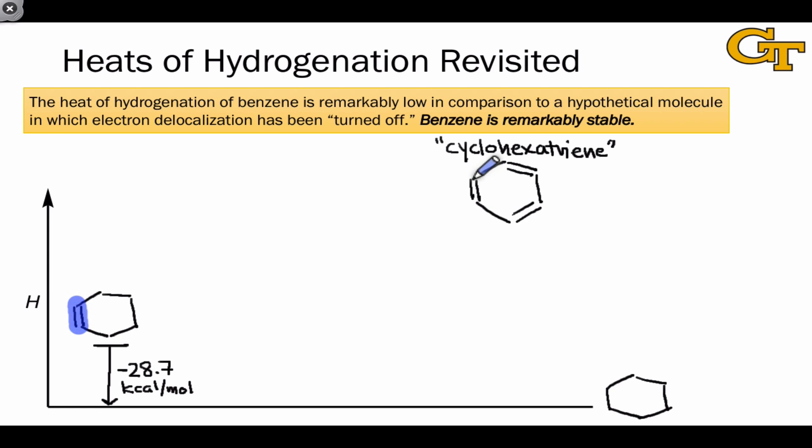Cyclohexene contains one double bond within its structure. How much enthalpy would be released if we hydrogenated a comparable molecule with three double bonds within its structure? Well, ignoring the impact of conjugation and resonance, which is the whole point of this hypothetical exercise,